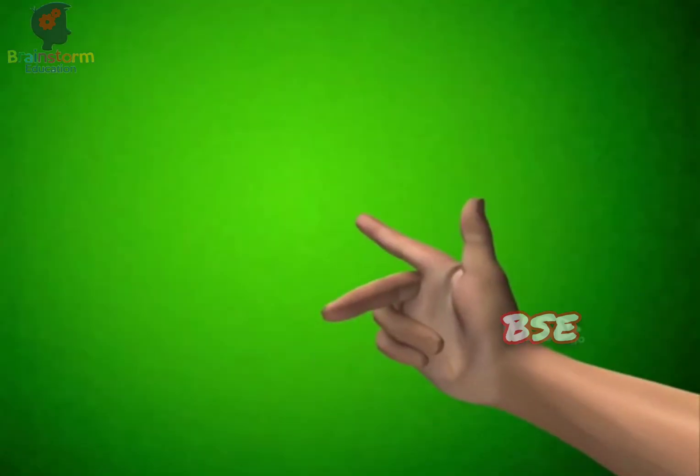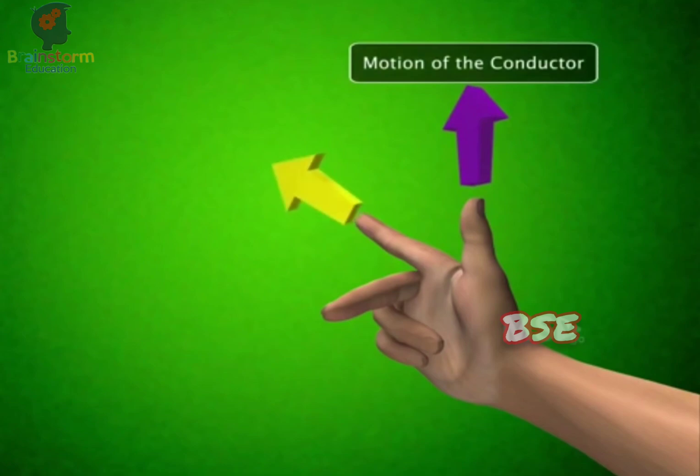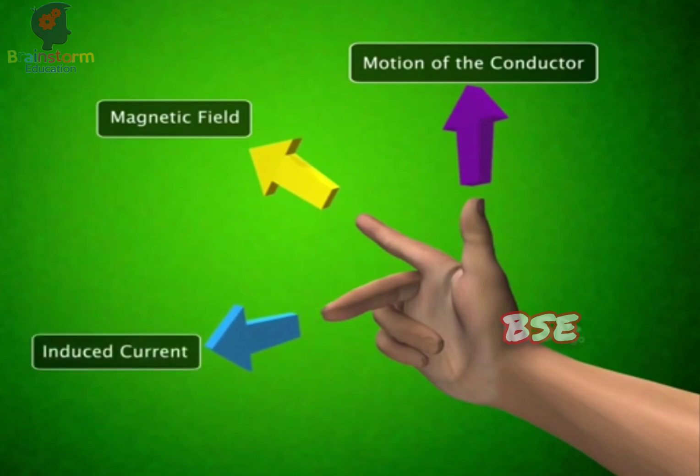For Fleming's right-hand rule, hold the thumb and first two fingers of the right hand in such a manner that they are mutually perpendicular to each other. The thumb indicates the motion of the conductor. The index finger indicates the direction of the magnetic field. And the second finger shows the direction of the induced current.